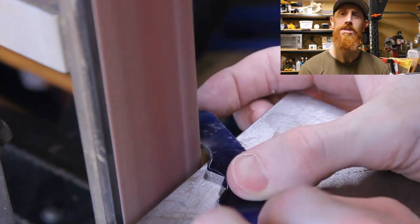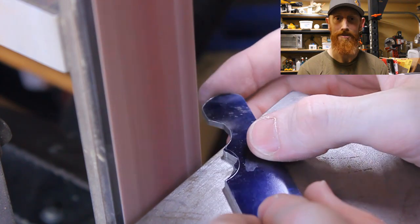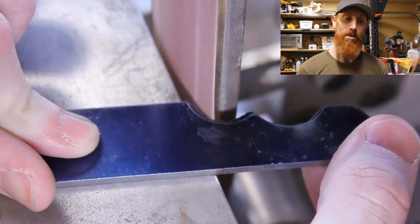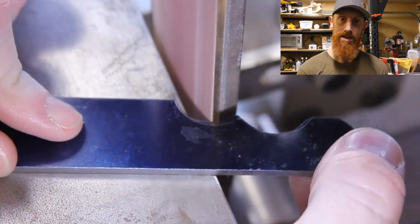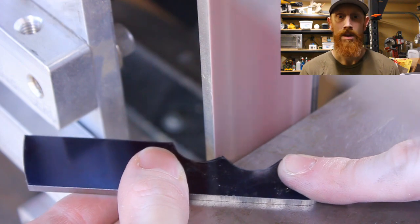We're going to use Osage orange wood from Pops Knife Supply for the handle scales. The handles will be attached to the tang with brass Corby fasteners and G-Flex epoxy. That's the knife we're making today.